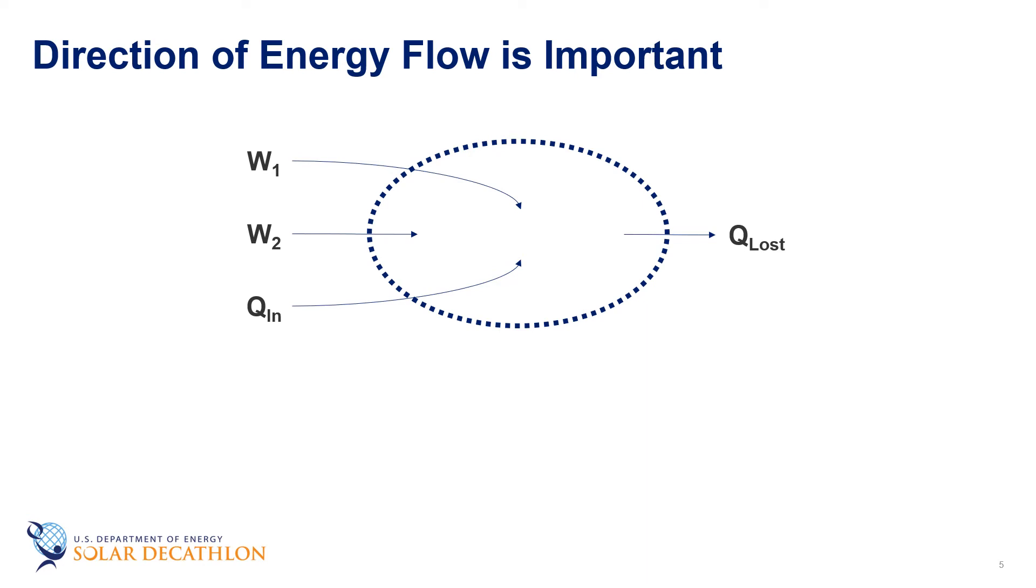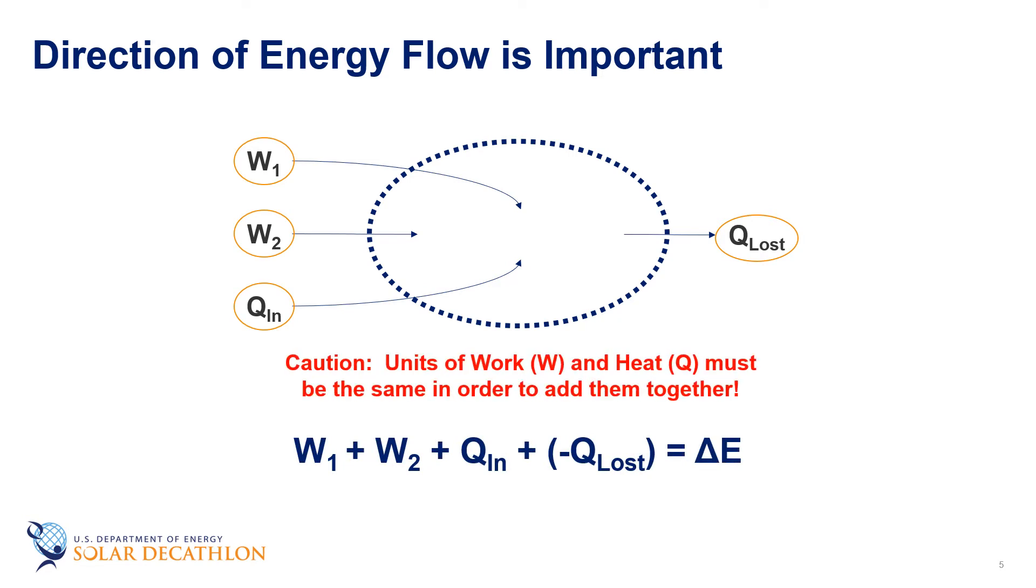We do that by drawing the energy flows across the boundary. Typically, we show that as arrows going in is positive and arrows out are negative. In this case, we have work coming in from two different sources. We're adding some heat from another source, and we've got some heat that is lost. And so the sum of these flows is equal to the change of energy, or delta E. It's important to keep track of these signs. I like to keep everything going in as positive and everything going out as negative.